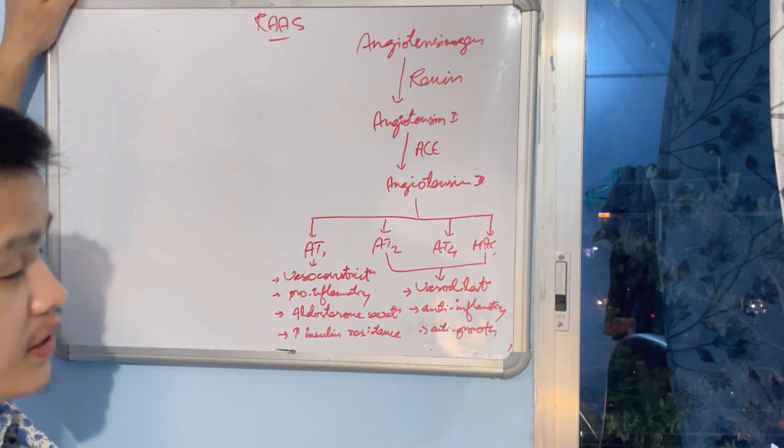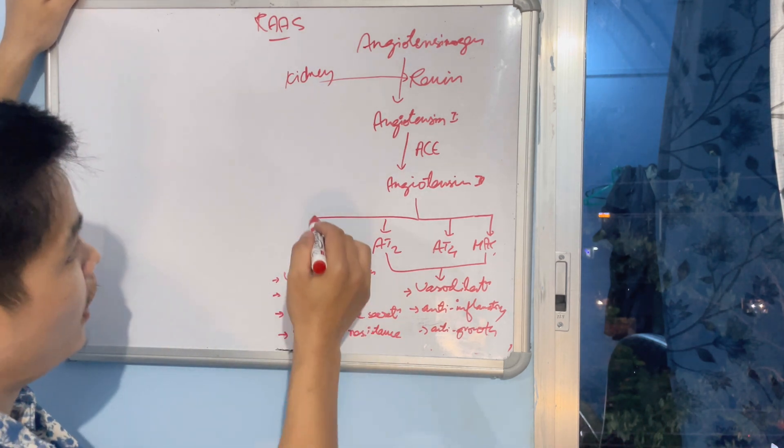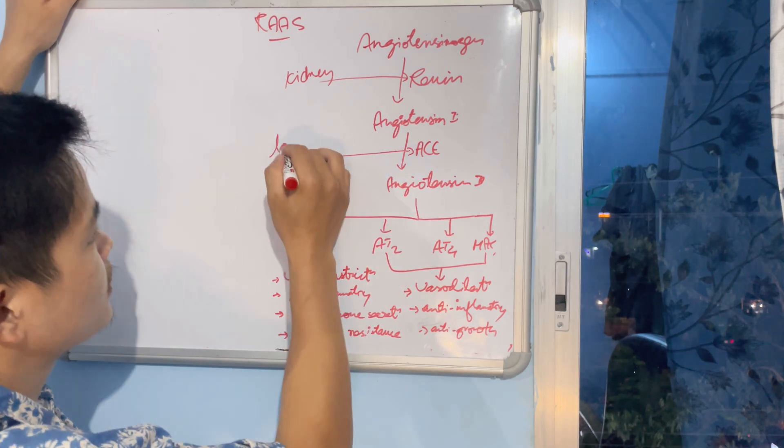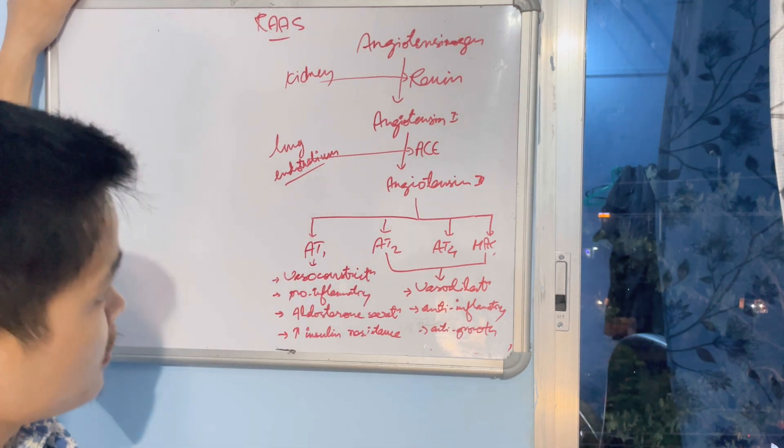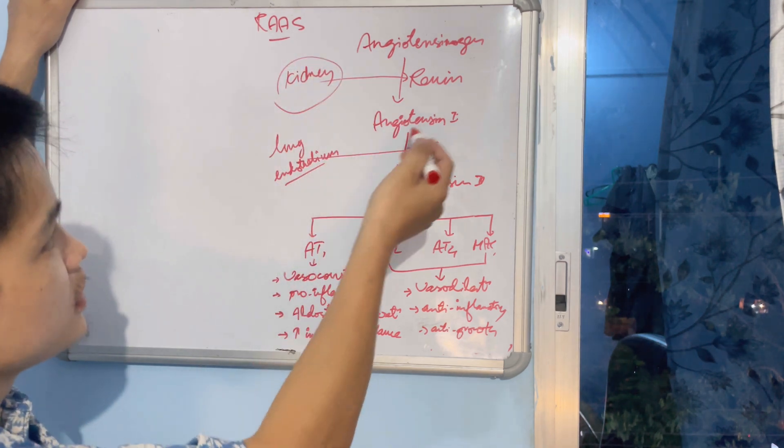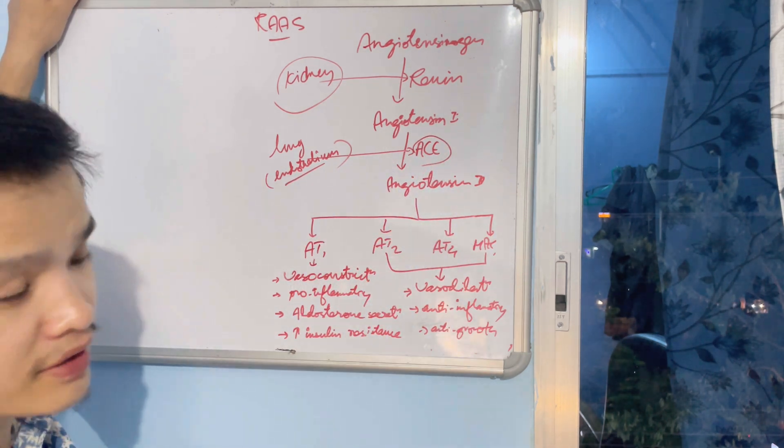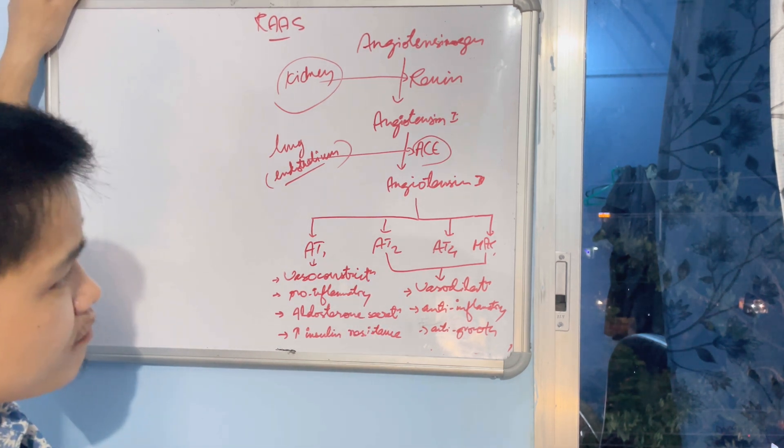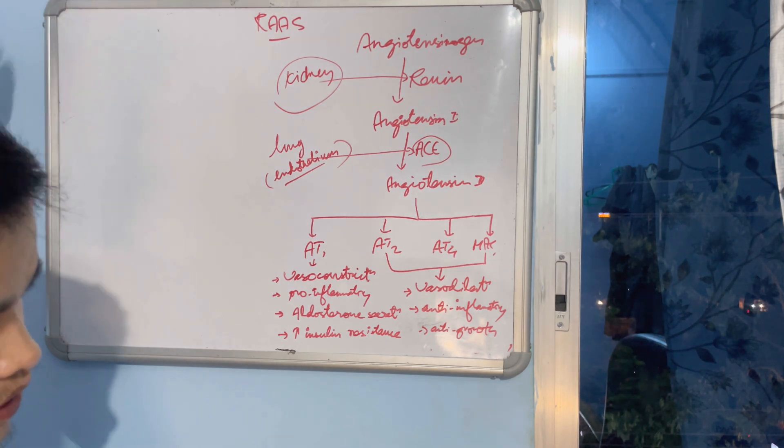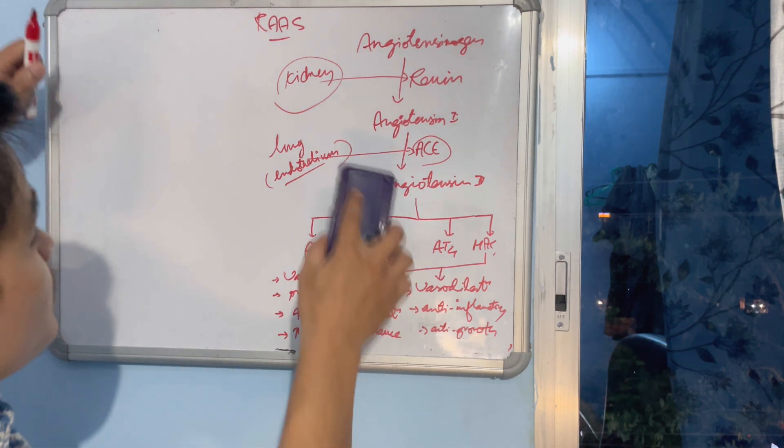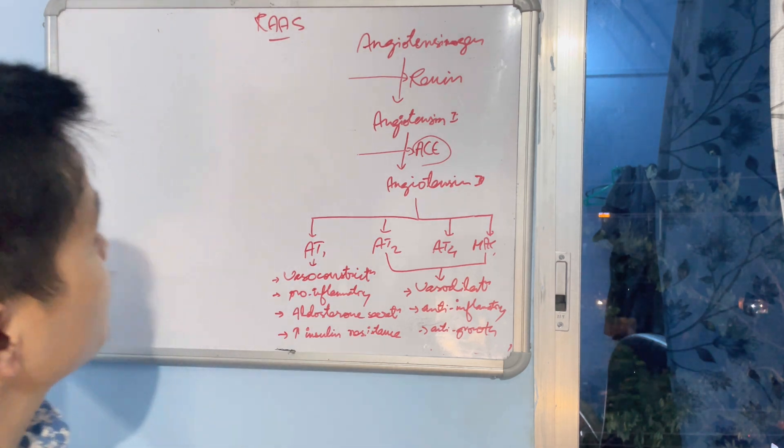Now the question is: from where is renin released? You already know it is released from kidney. And from where is this ACE released? It's from lung, from endothelium. Now the question is, why does kidney release renin? Before that, I would like to tell you: this ACE is not only released from the lung, it is also released from the kidney in human body in adequate amounts. Studies have shown it, but it's okay, let it be. Coming back to the topic, the question was: why does kidney release renin? There may be three conditions when kidney releases renin. I know you know it, but let me revise it for you.